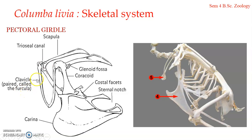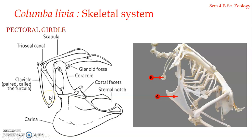Ventrally, the two clavicles are fused with a small interclavicle to form a laterally compressed disc called the hypocleidium. This V-shaped bone formed by the fusion of the clavicles on either side and the interclavicle is known as the furcula or wishbone. It works as a spring-like connection between the two halves of the shoulder girdle and is a very important feature of the bird skeletal system.